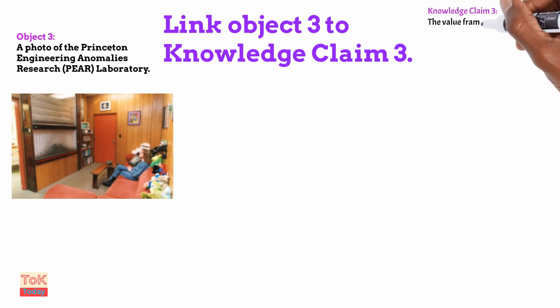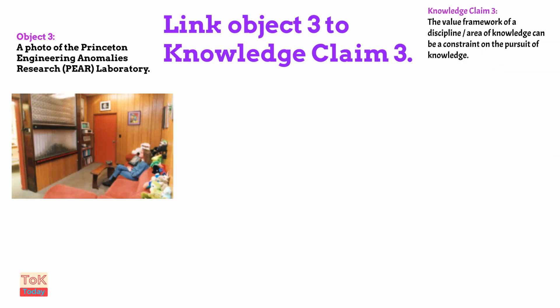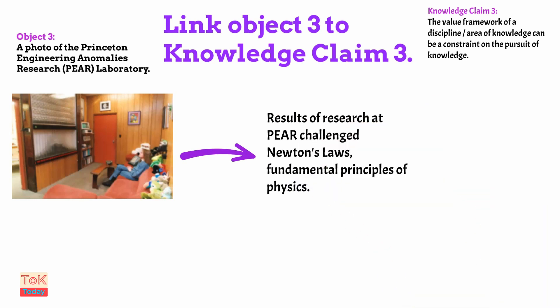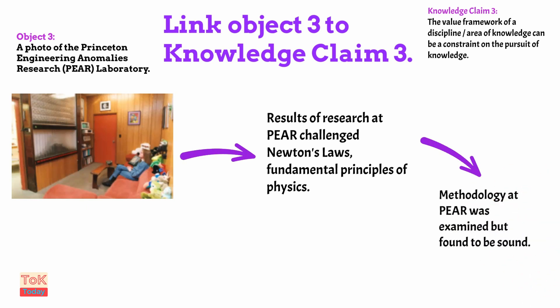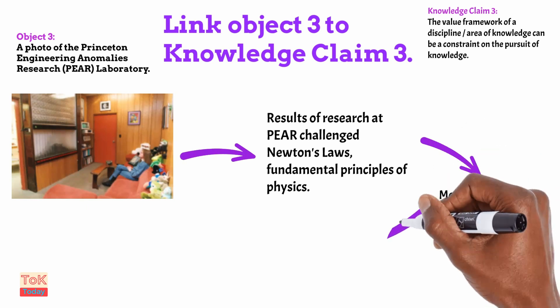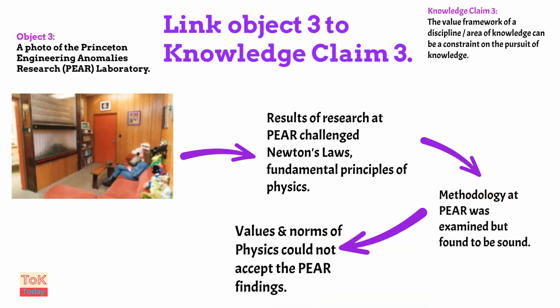Linking object three to knowledge claim three — that the value framework of a discipline or area of knowledge can in itself be a constraint on the pursuit of knowledge. The results of research at PEAR challenged Newton's laws, which are the fundamental principles of physics. The methodology of research at PEAR was examined but no significant problems were found with it. As such, the results of PEAR were directly challenging the fundamentals of physics, and the physics establishment could not accept the PEAR findings — therefore they had to impose a constraint on the pursuit of knowledge.